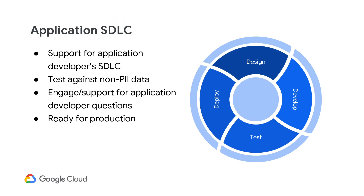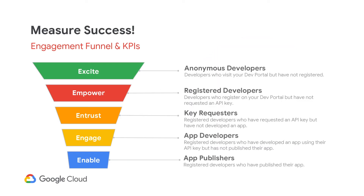The advantage of a test API product is that you have control over if and when the app developer is allowed to deploy their application against your production environment. It's important to support your application developer's software development lifecycle. This will enable your developers to onboard quickly, try out the API product, test it, and get the application out to market faster. Don't forget to capture metrics to measure the progress for developer adoption and the success of your program.